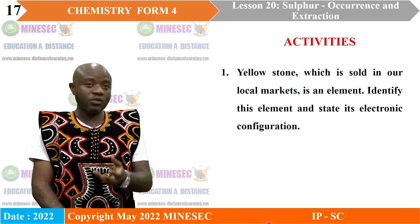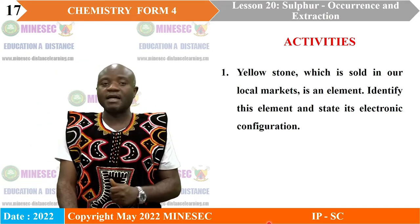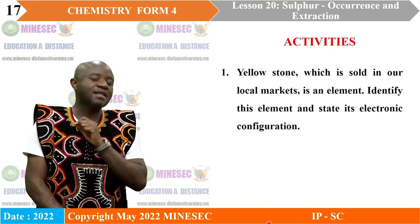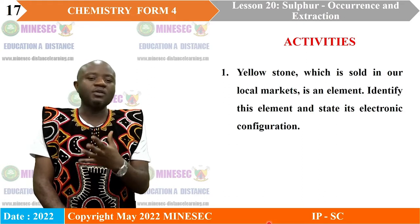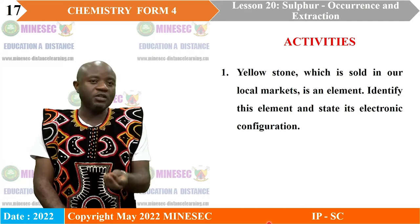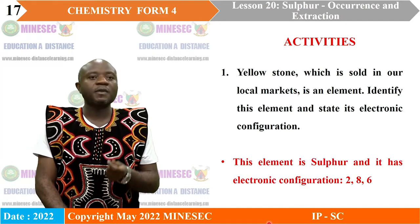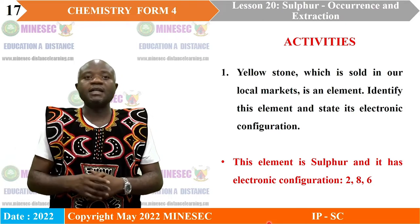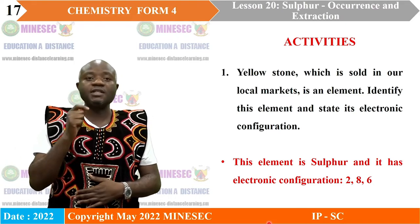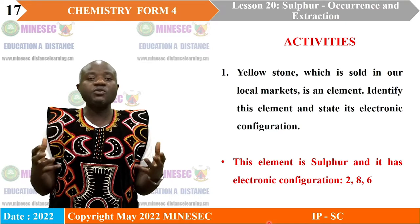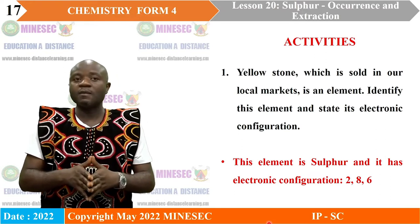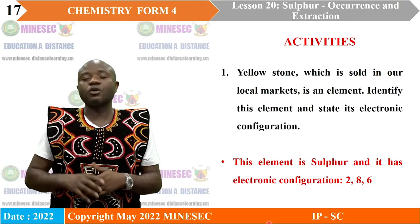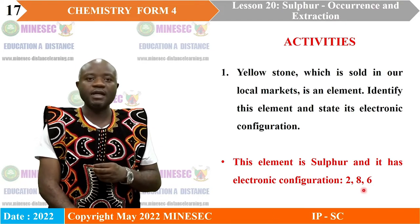Activities: Yellowstone, which is sold in our local market, is an element. Identify this element and state its electronic configuration. Yellowstone is the element sulfur, and its electronic configuration is 2, 8, 6. The yellowstone that we find in our local market is an element, and that element is sulfur with electronic configuration 2, 8, 6.